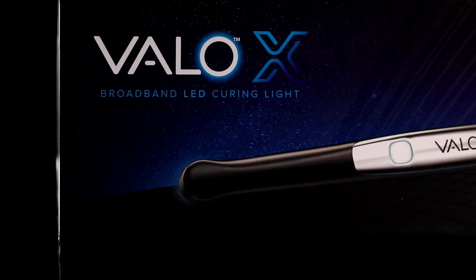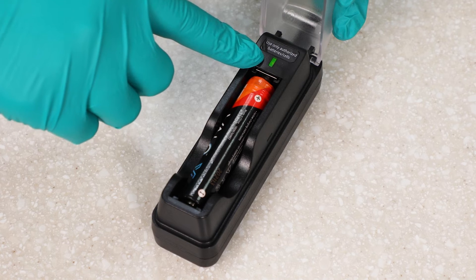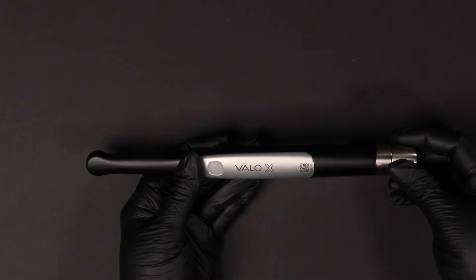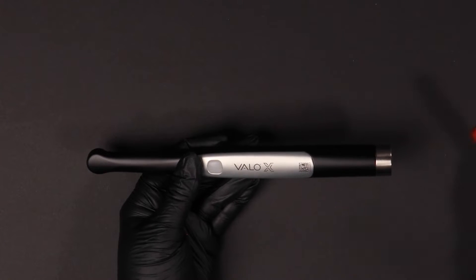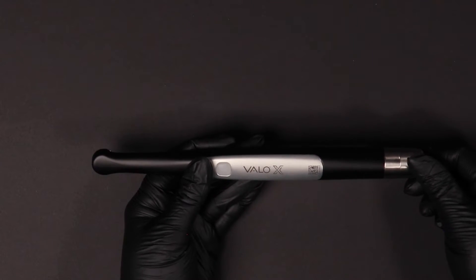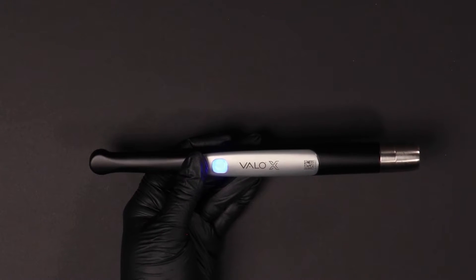To use VeloX Curing Light battery-powered, ensure your battery is fully charged. Twist the cap at the base of the curing light to release the back cap and insert the battery with the positive terminal facing towards the lens. Secure the back cap by turning it clockwise until it stops.